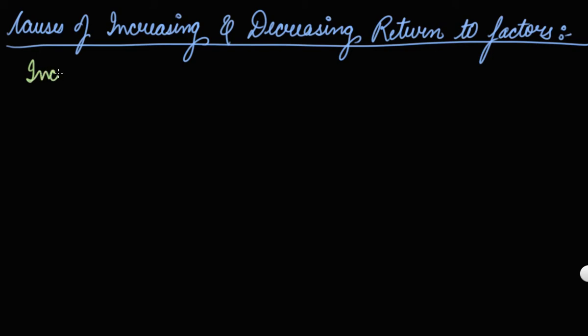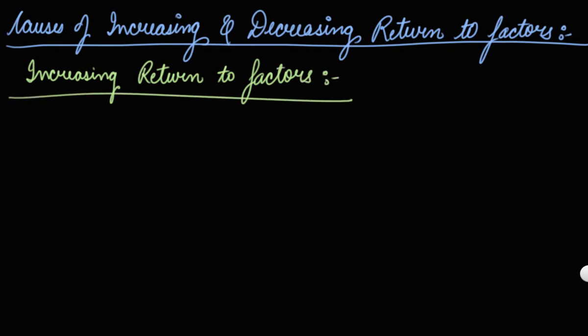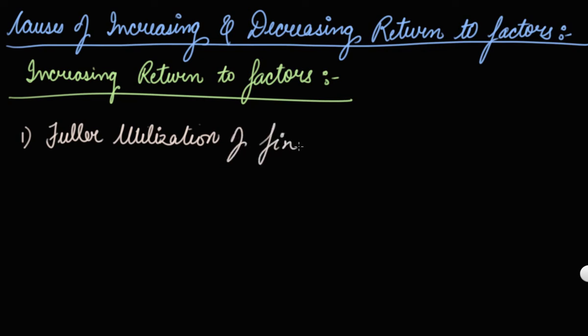Number one, we will take the increasing return to factors. The first cause is fuller utilization of fixed factors. In the initial stages, fixed factors — you can say like a machine — remain underutilized. So its fuller utilization calls for greater application of the variable factors; you need to combine variable factors to the fixed factor. Hence, initially, additional units of the variable factor add more and more to the total output, and the marginal product of the variable factor tends to increase.